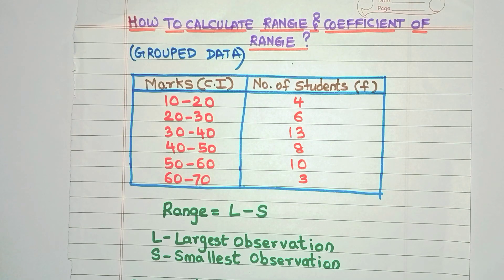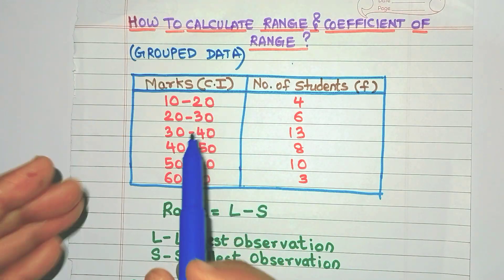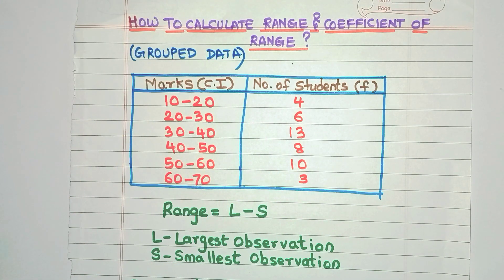Now for grouped data, we don't know what is the actual largest observation and smallest observation, because all the observations are grouped in these class intervals. So how do we find range in such a case?